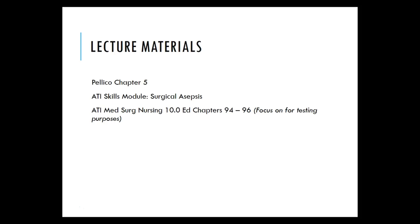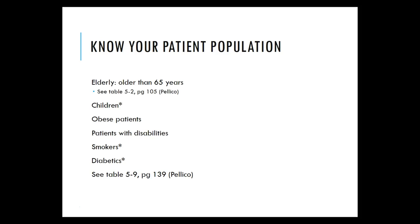Focus on chapters 94 through 96 for testing purposes. Know your patient populations: elderly patients older than 65 (see Pellico table 5-2), children, obese patients, patients with disabilities, smokers, and diabetics. For children, child life specialists are really good at helping them through the surgical process. Know that healing is going to be slower for smokers and diabetics.